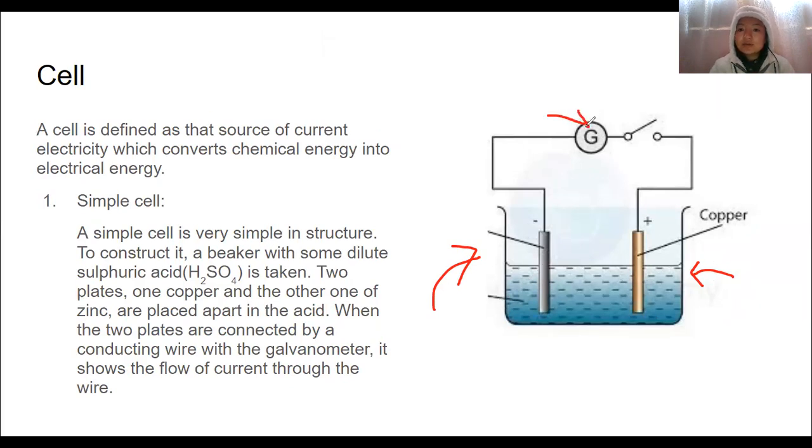This device here, this is a symbol for galvanometer. Galvanometer, it detects a little amount of electricity, meaning that galvanometer is extremely sensitive towards any electrical flow. This one here, this symbol is for switch. Moving on.